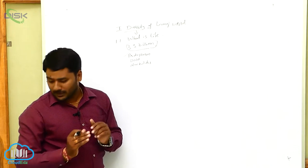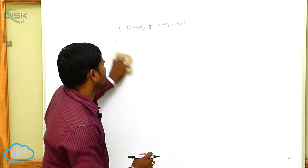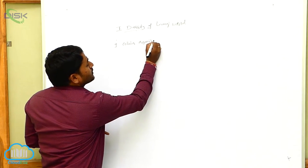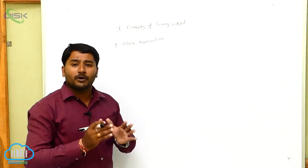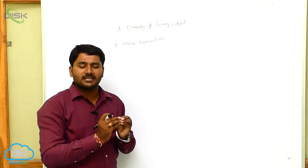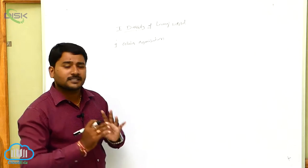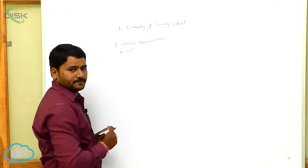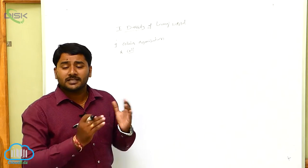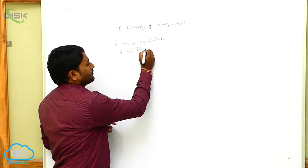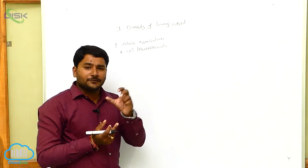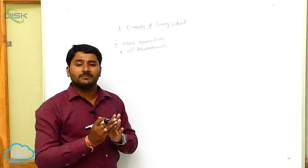Let us look at some properties of living organisms. The first character is cellular organization. Each individual's body is made up of one or many cells, ranging from single-cell animals to organ system grade of organization. If an individual is made up of a single cell, it is called unicellular organization — for example, protozoans. This is also known as protoplasmic organization, where the single cell possesses different organelles that perform different functions.